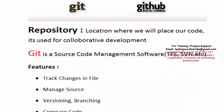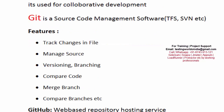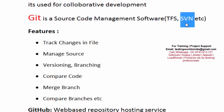Next, let's understand what Git and GitHub are. Git is a source code management software. There are other tools doing the same task — one is TFS, Team Foundation Server from Microsoft, typically used with the .NET framework. We also have Apache SVN, which can be used for the same purpose. But here we are going to use Git, which not only manages source code but also provides many other features.